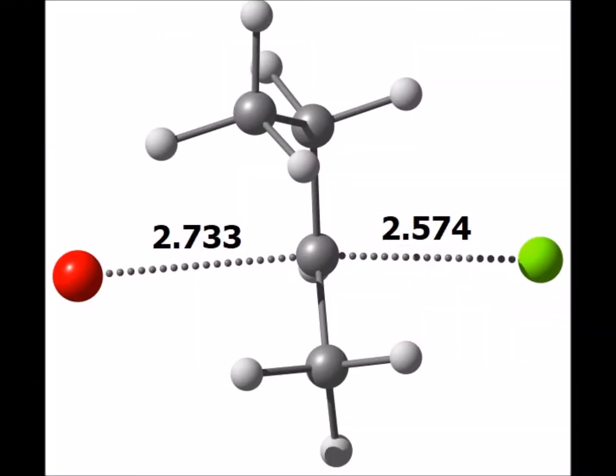Here is the computed transition state for the nucleophilic attack of bromide on optically pure S-2-chlorobutane. The distance in the transition state between bromide and the electron-deficient carbon is 2.733 angstroms, and the distance between the carbon and the chloride leaving group is 2.574 angstroms.